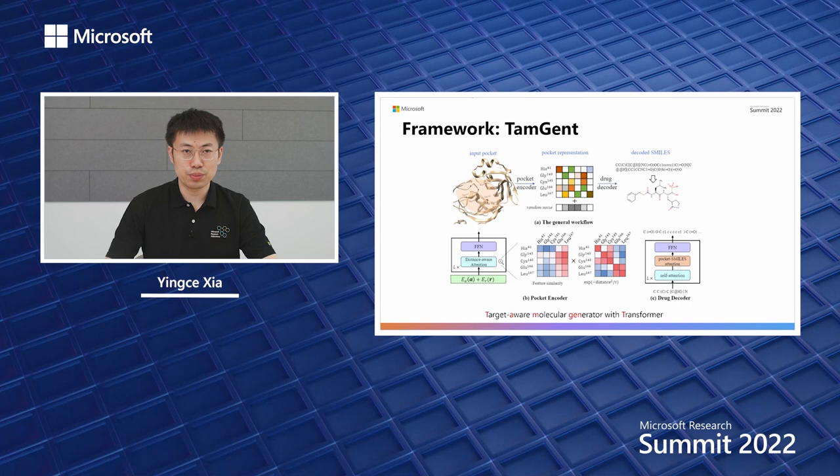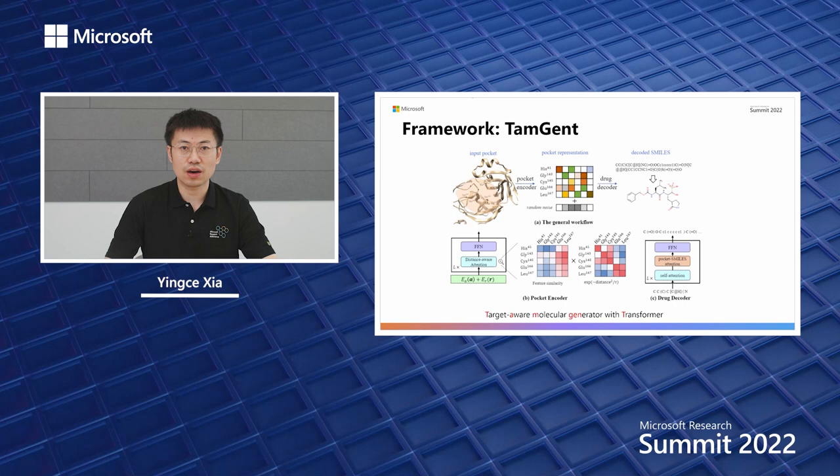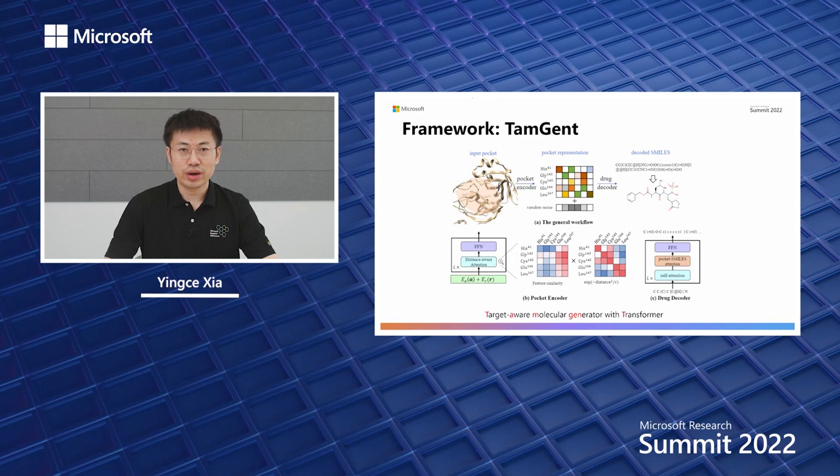The encoder is a variant of the transformer model, where it encodes the protein information, including the 3D coordinates and the amino acid information. With it, we can get hidden representations of the pocket. After that, we feed the features into the decoder, where we will generate the SMILES of the compounds.